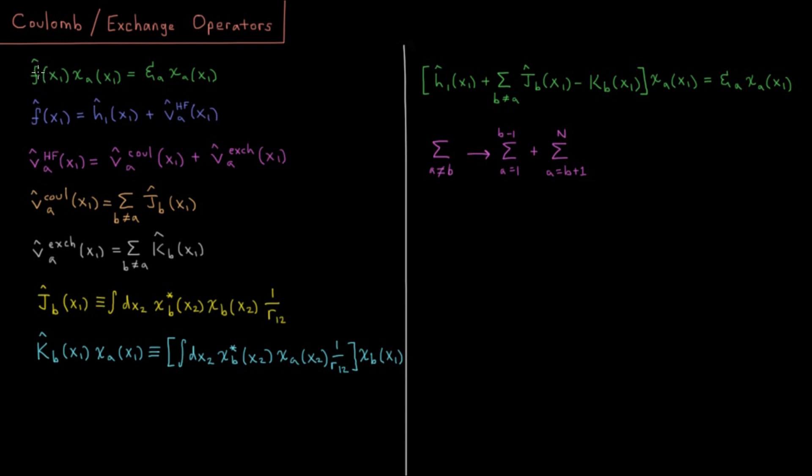So I believe we've seen this equation before in terms of the Fock operator where we have the Fock operator being a function of the coordinates of electron one acting on orbital chi-a, spin orbital chi-a which is where electron one is, its x, y, z and spin coordinates.